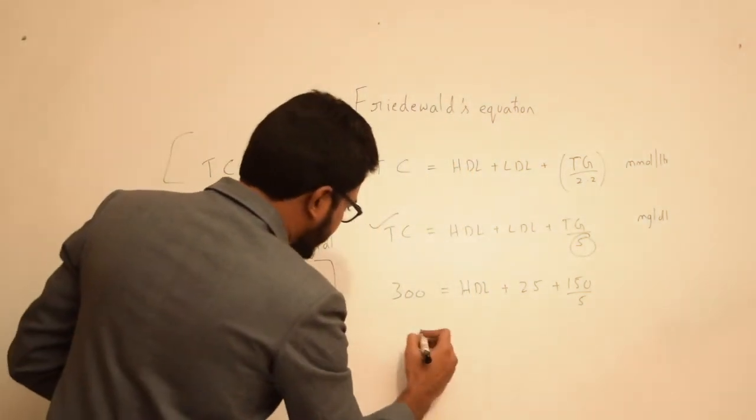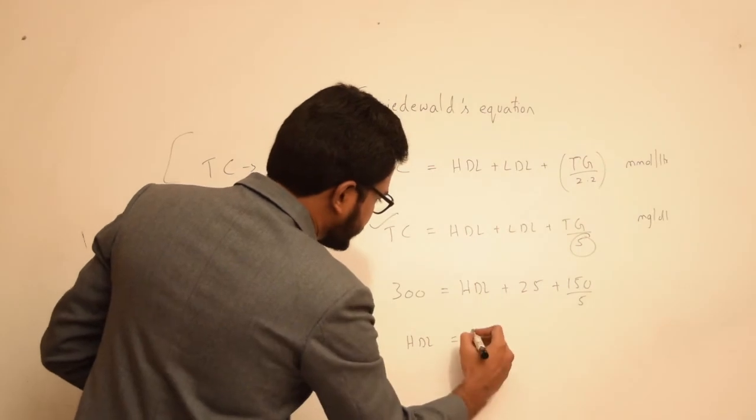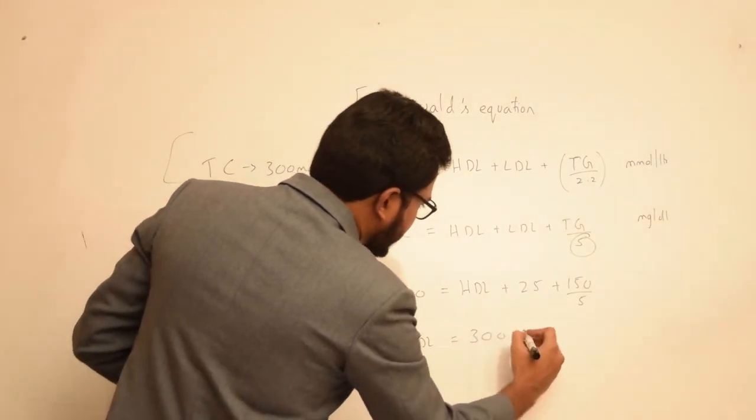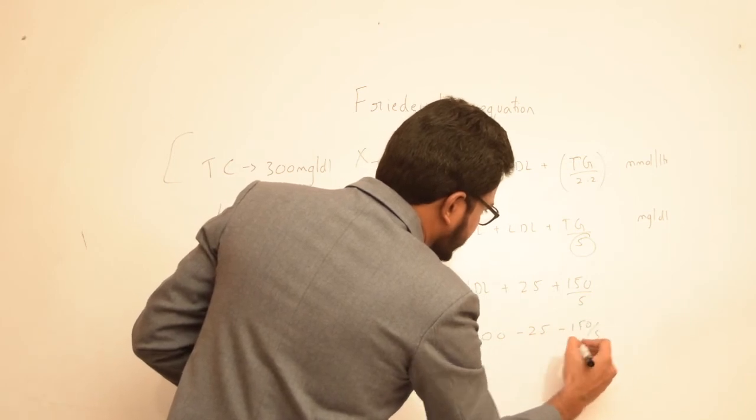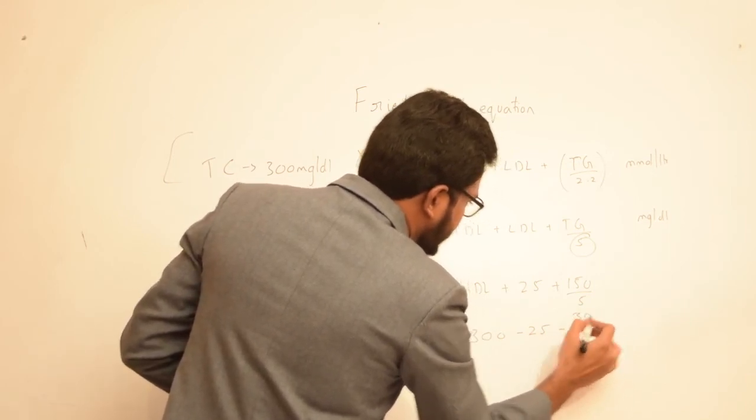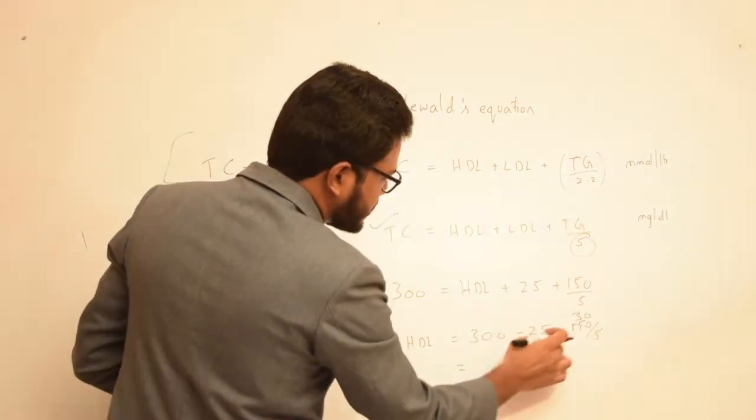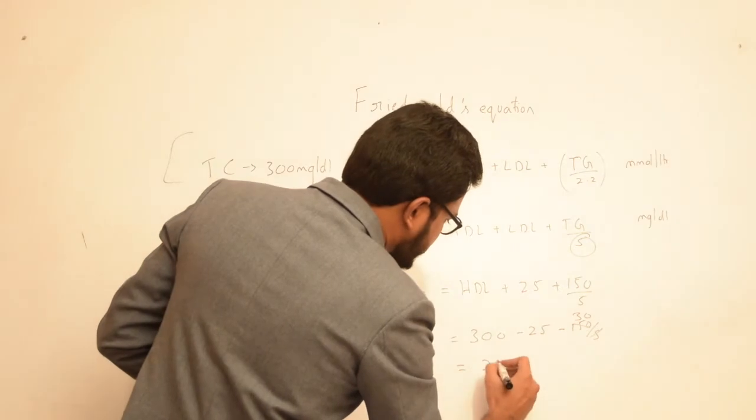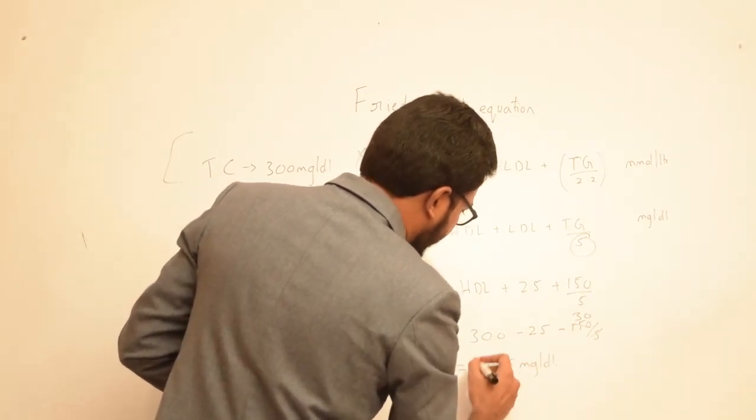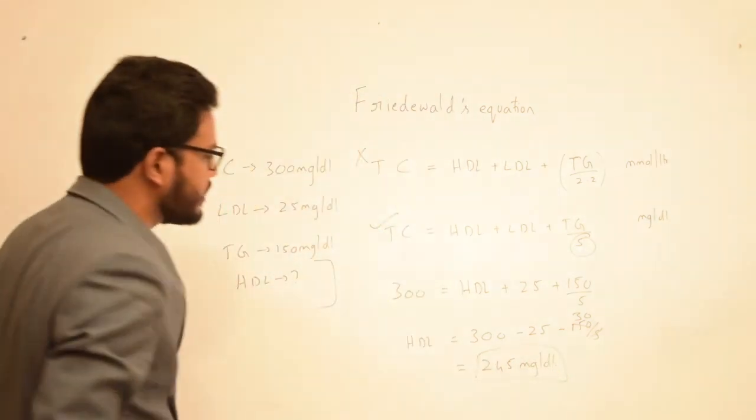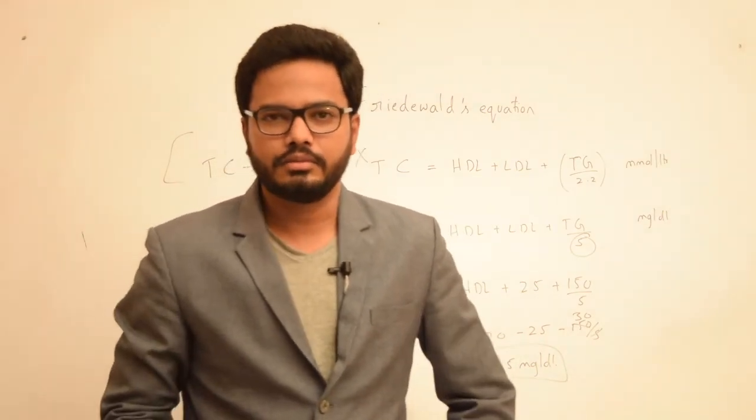So if we substitute the values, HDL is equal to 300 minus 25 minus 150 by 5. So this is equal to 30, 150 by 5. So the total value would be 300 minus 55, which is approximately 245 milligrams per deciliter. So this is the final value or the final level of HDL in the plasma.